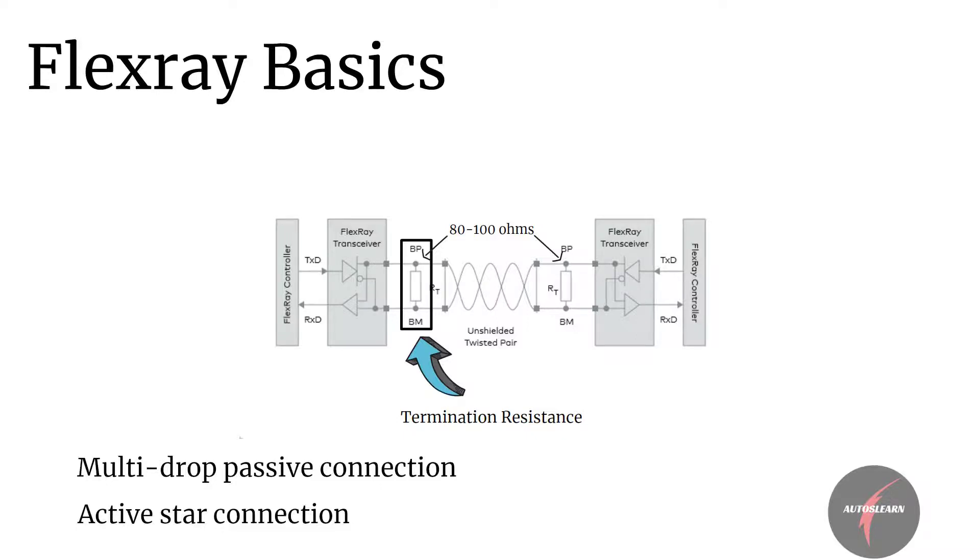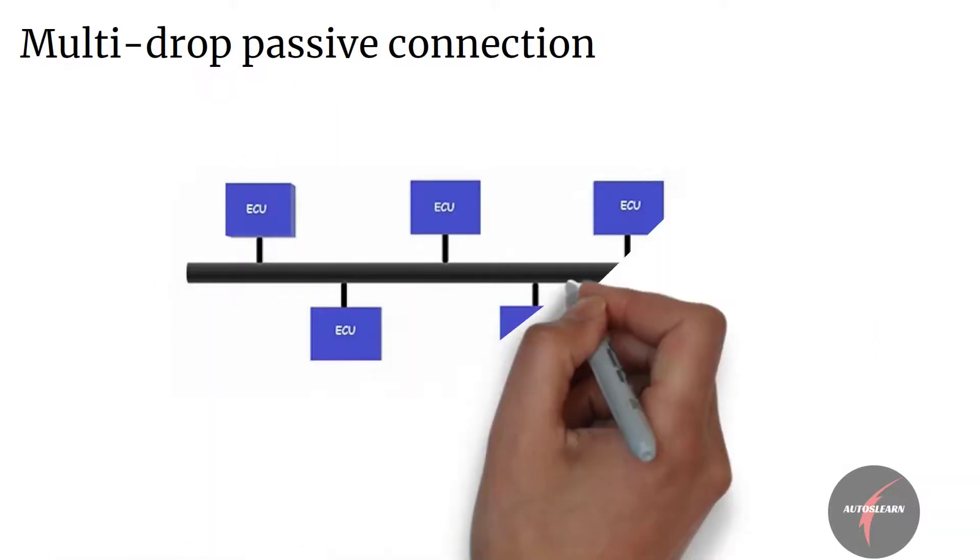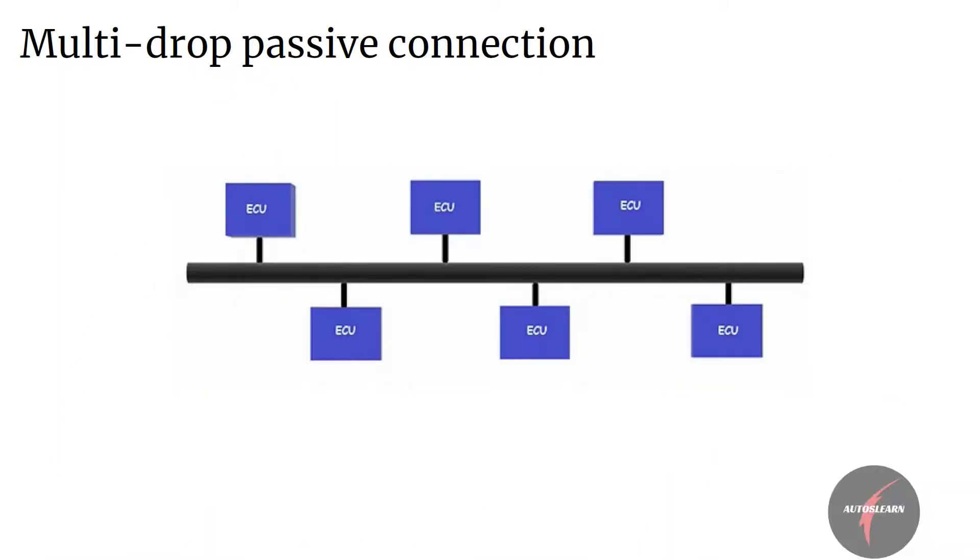Multi-drop bus topology contains a single network cable that connects multiple ECUs together. This is quite common topology used in CAN and LIN networks as well. Each ECU in the network can branch up to a small distance from the core trunk of the bus. Ends of the network have termination resistance installed that eliminates problem with signal reflections.